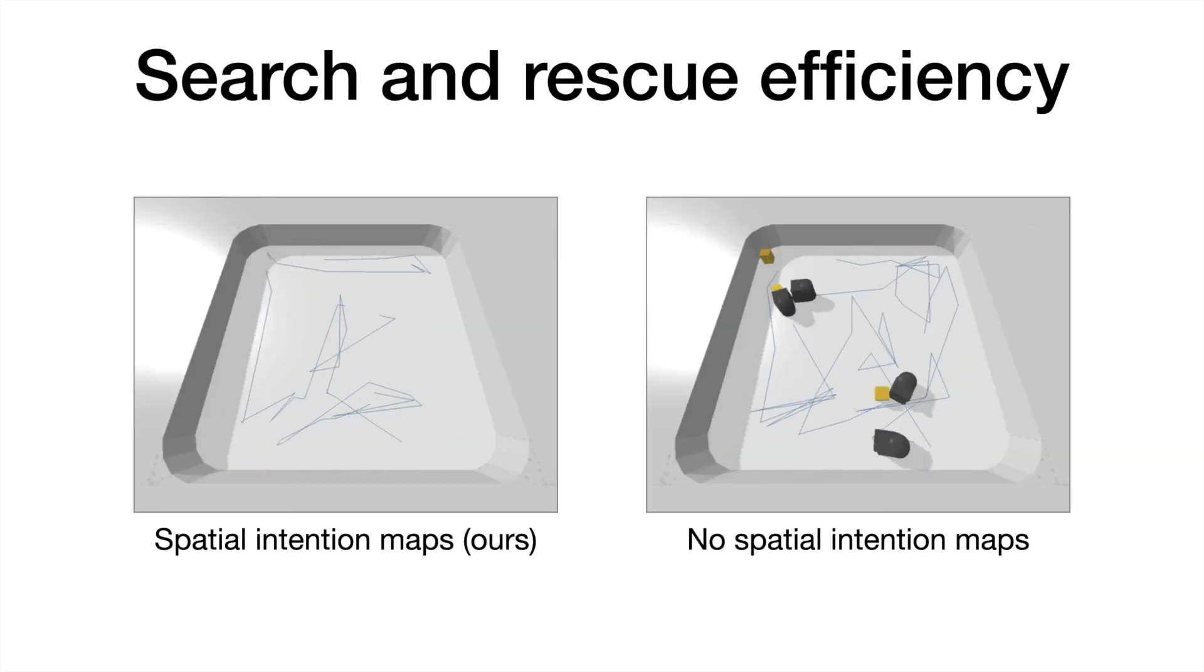We also visualize the search and rescue movement trajectories for policies trained with and without spatial intention maps. This allows us to qualitatively observe the efficiency enabled by intention maps. The robots trained without intention maps do not know each other's intentions, and as a result, they are not able to coordinate well and move much less efficiently.